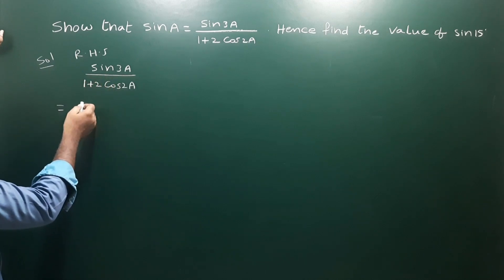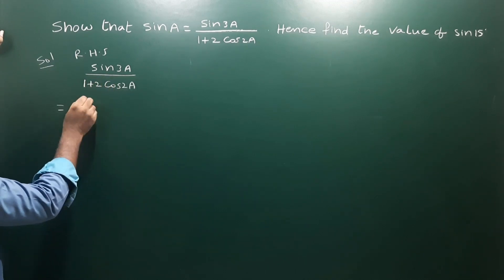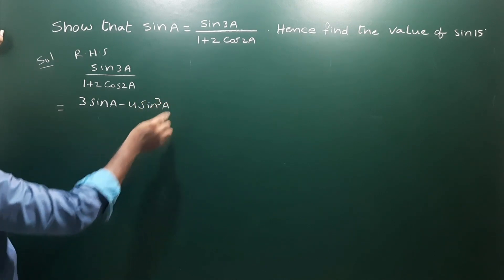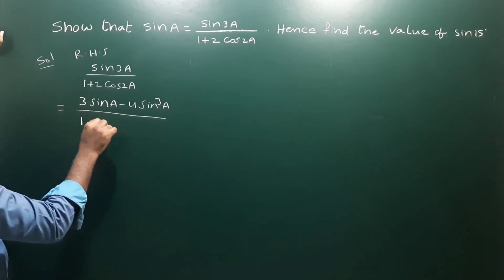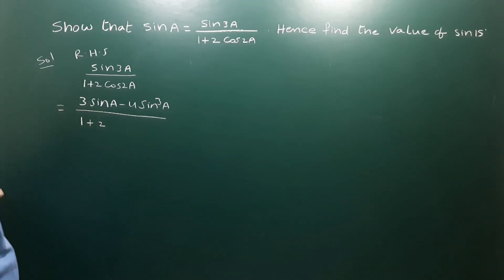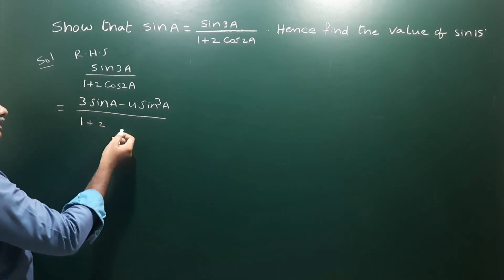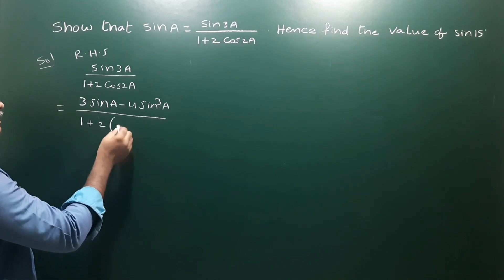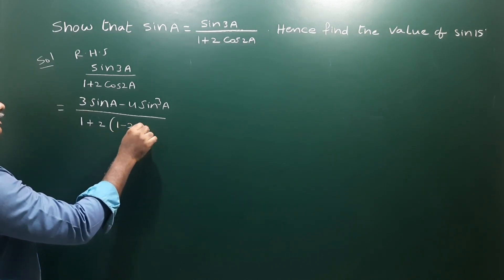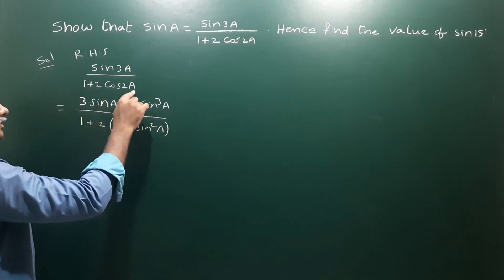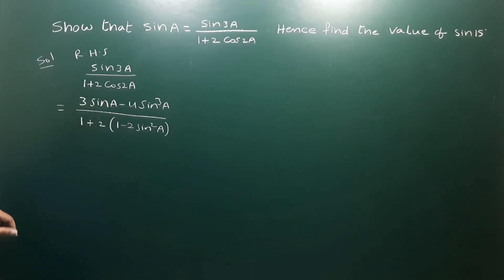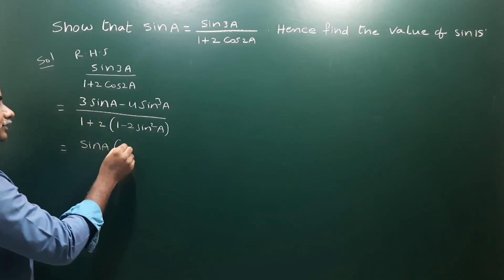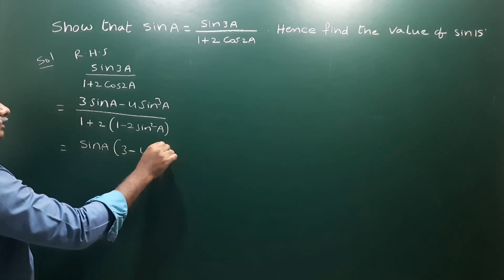First, write the formula for sin 3a: sin 3a equals 3 sin a minus 4 sin cube a. For cos 2a, we write the formula in terms of sines. Then take sin a as common in the numerator; the remaining factor is 3 minus 4 sin square a.